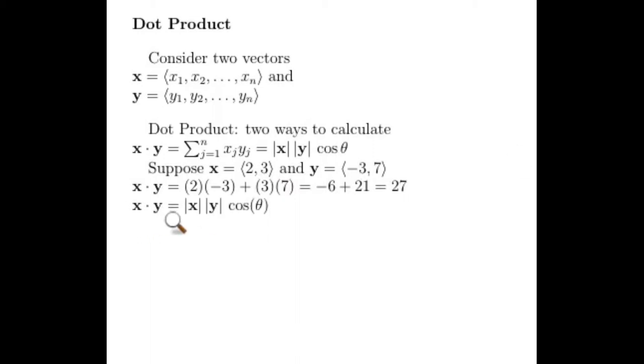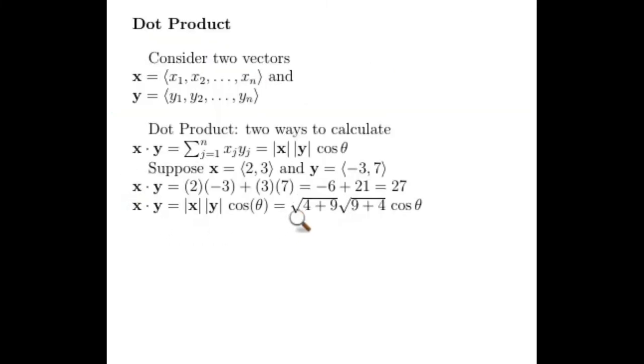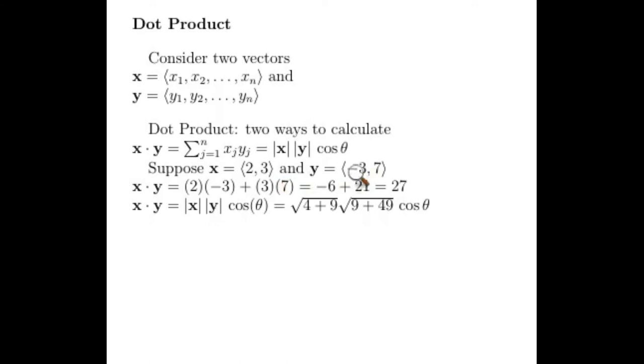We also know that the dot product equals the length of x times the length of y times the cosine of the angle between them. Since x is (2, 3), there's a right triangle and we can find the length: the square root of 4 plus 9, because the vector went over 2 and up 3, so the length is the square root of 2² + 3². The length of y, which went -3 and up 7, is the square root of (-3)² + 7², which is the square root of 9 + 49, times the cosine of the angle between them.